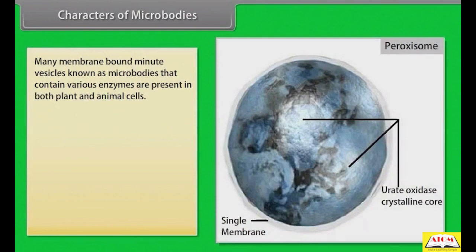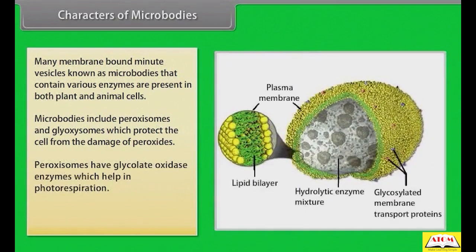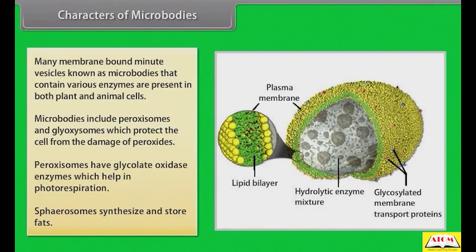Many membrane-bound minute vesicles known as microbodies, that contain various enzymes, are present in both plant and animal cells. Microbodies include peroxisomes and glyoxysomes, which protect the cell from the damage of peroxides. Peroxisomes have glycolate oxidase enzyme, which helps in photorespiration. Spherosomes synthesize and store fat.